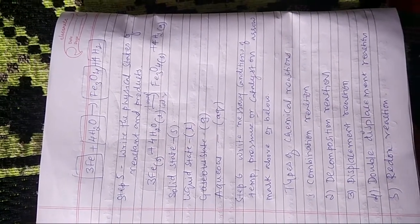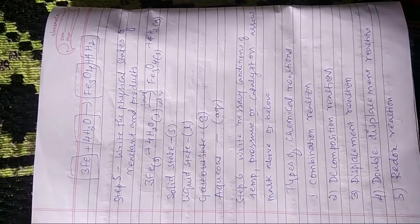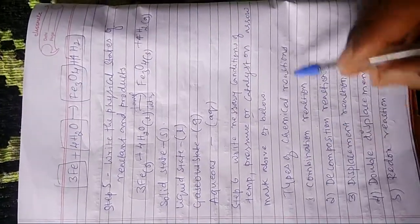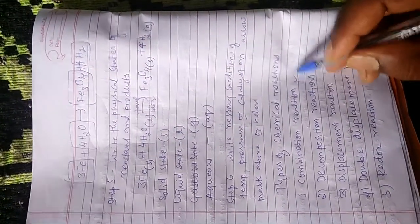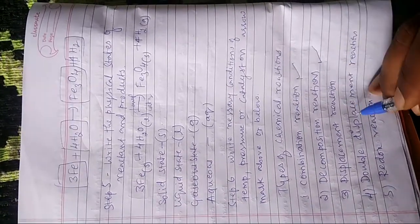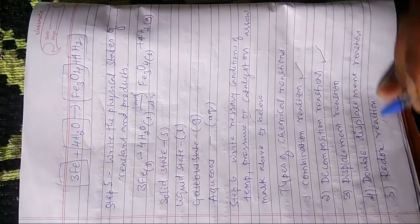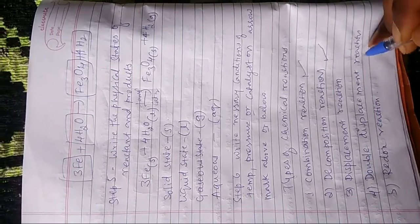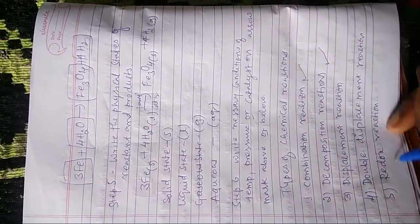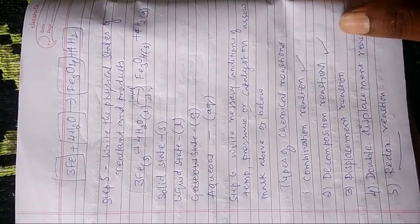Now let us see the types of chemical reactions. The types are: combination reaction, decomposition reaction, displacement reaction, double displacement reaction, and finally redox reaction.